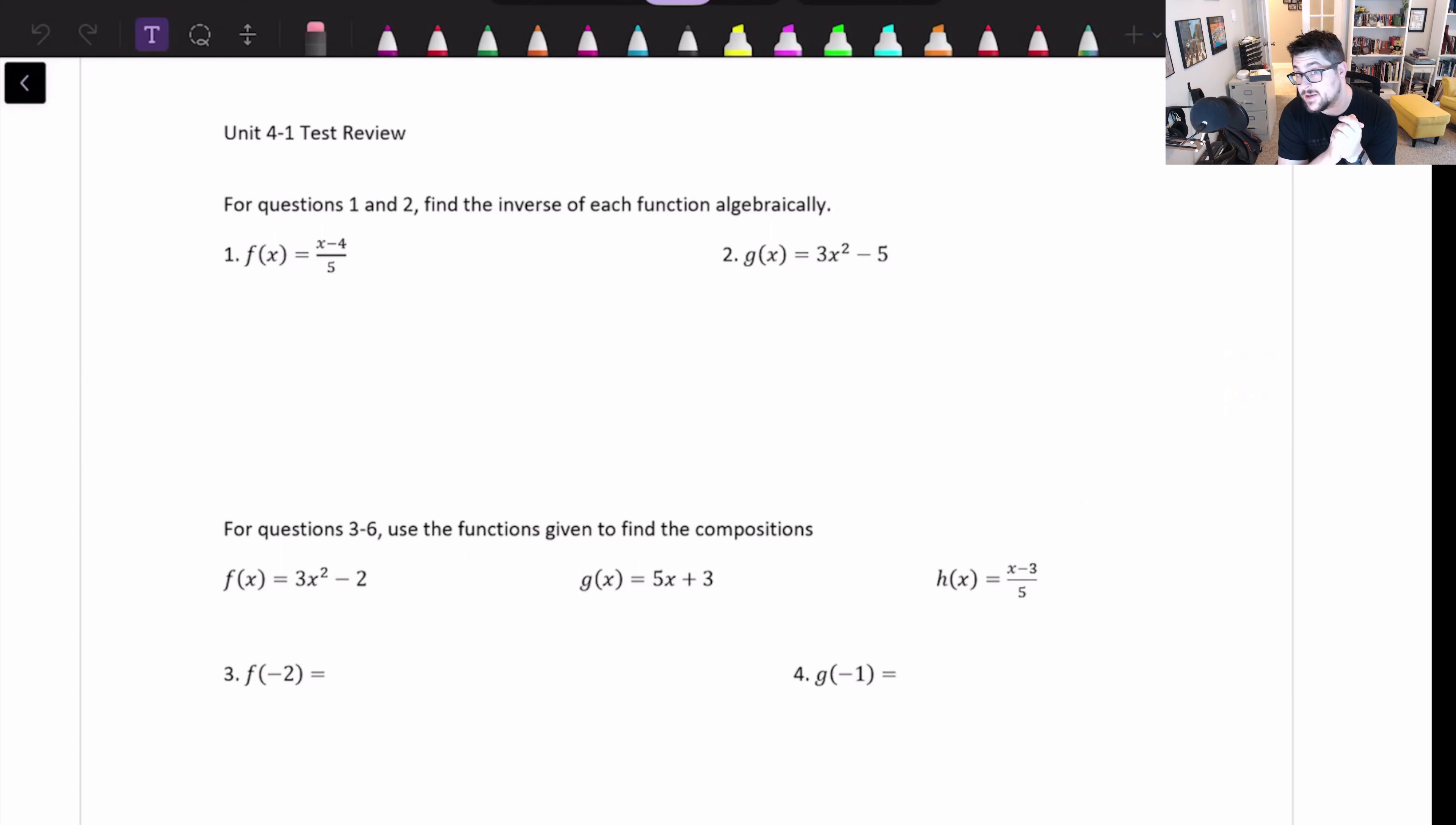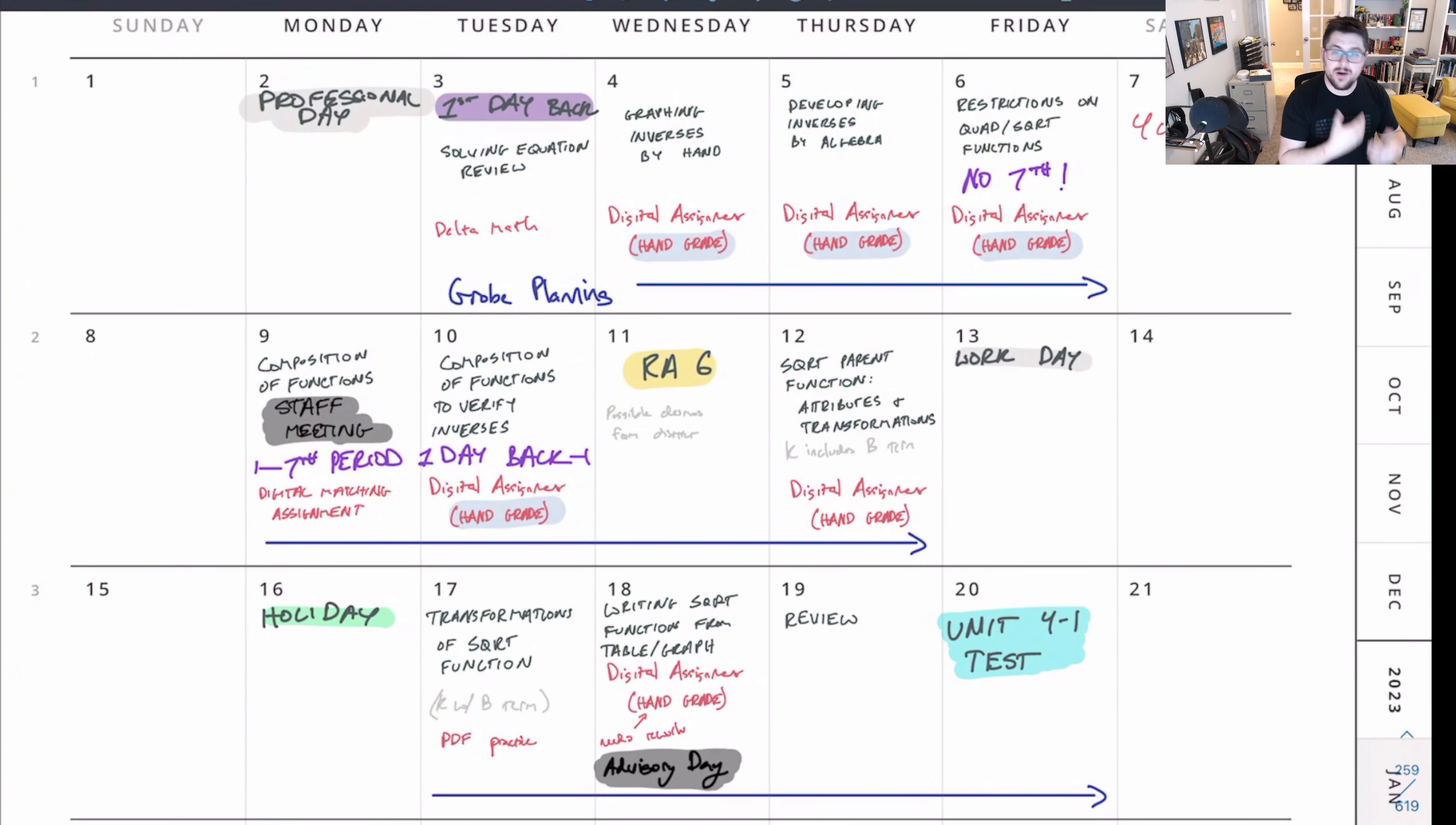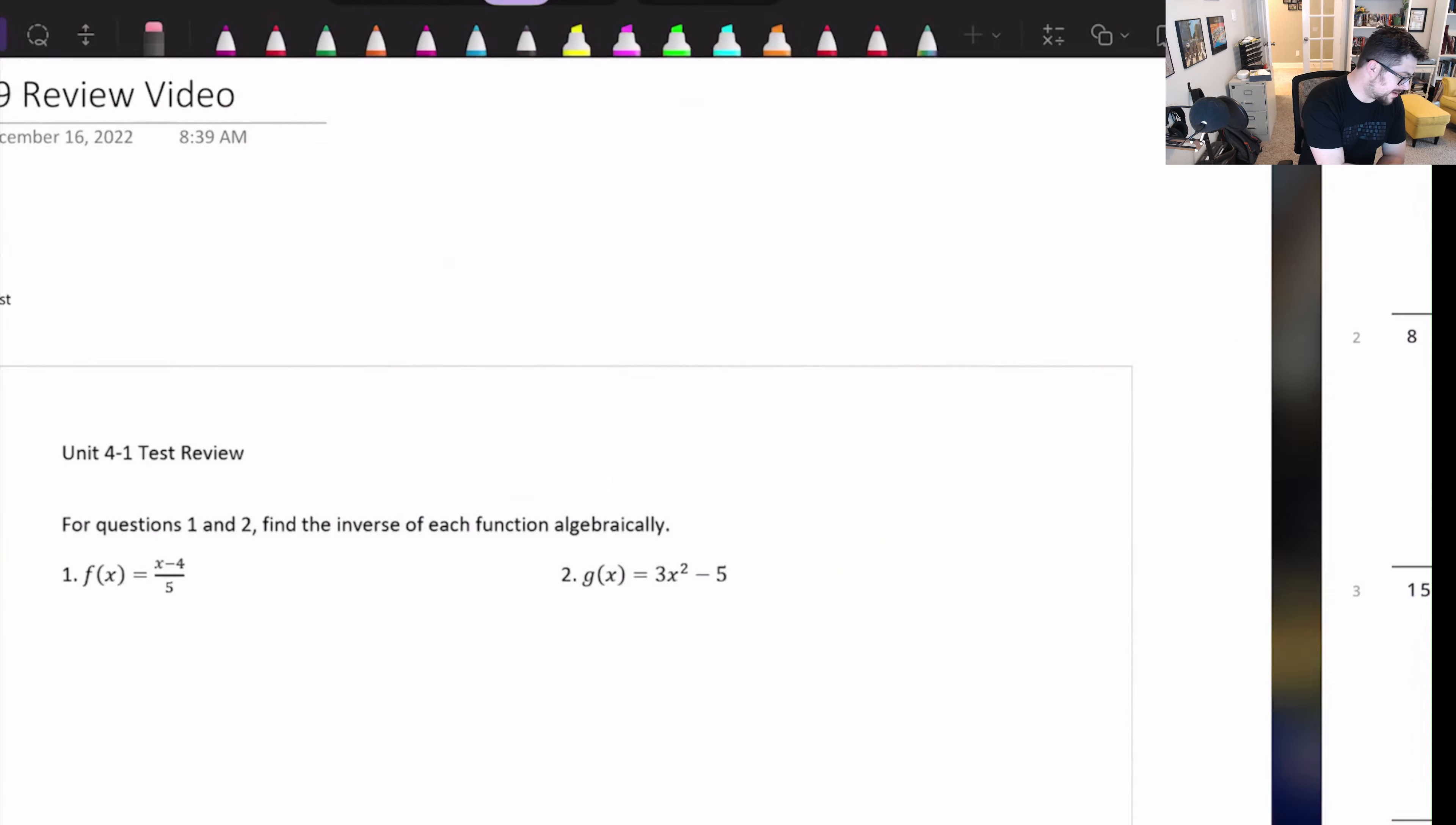All right, y'all. What we're going to be doing today is we're going to be going over the 4-1 test review. And what I'm going to be doing while I'm talking about this stuff is rather than going and solving every single problem for y'all, I'll instead solve about half of them and talk about where you can get notes for these things. So you may see me switch over to my calendar to kind of talk about what day did we cover certain materials. I know my calendar is messy. This is for me, not for y'all. So we'll just talk about it.